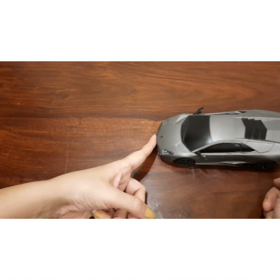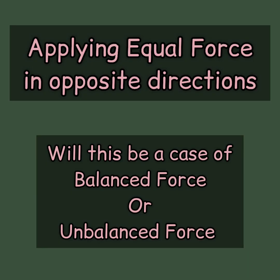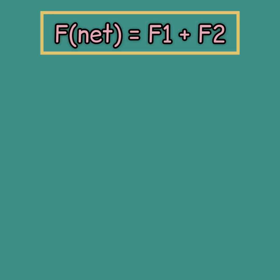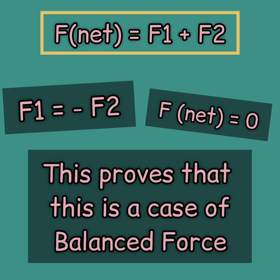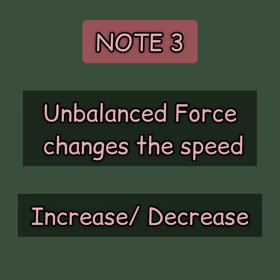Let us now see another case. I am now applying two forces on this car: F1 from the front and F2 from the back. Since these forces are equal and in opposite directions, let's find whether they are balanced or unbalanced. The resultant force or F net equals F1 plus F2, and since F1 is minus F2, the net force will be zero — which proves this is a balanced force. So if a balanced force acts on a moving object, the speed of the object will not change. But if an unbalanced force acts on a moving object, the speed will either increase or decrease.